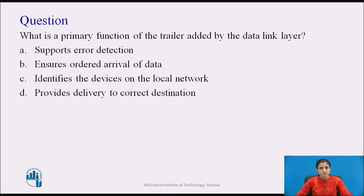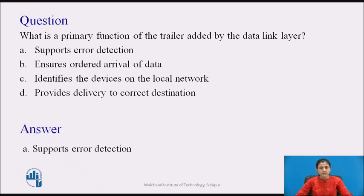What is the primary function of the trailer added by the data link layer? Option A: Supports error detection. Option B: Ensure ordered arrival of data. Option C: Identifies the devices on the local network. Option D: Provides delivery to the correct destination. The answer is Option A, supports error detection.